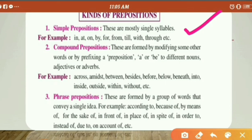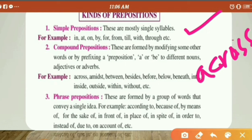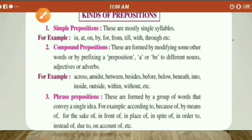Compound prepositions are formed by modifying some words. For example, the base word was 'cross,' meaning to go across something, and by adding 'a-' we get 'across' — as in 'we swam across the river.' Similarly, from 'midst,' by adding 'a-' we get 'amidst.' These are examples of compound prepositions.